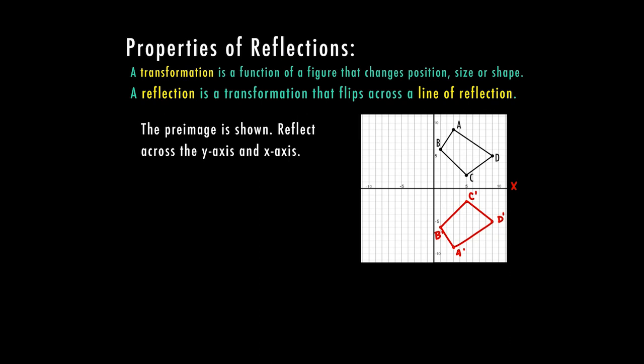Now we're going to find our reflection on the y-axis. As I go over the y-axis, I count the distance and go the other way across it — my y-value stays the same, it's just how far I'm going horizontally. Starting with B, which is one place over, there's my B image. A is three places, so I count three to the other side. D is the farthest — about nine — so I go nine across. C is five away, so I go five over.